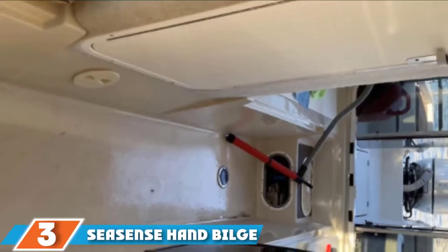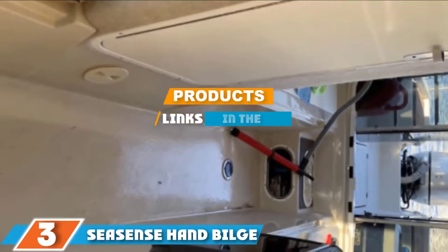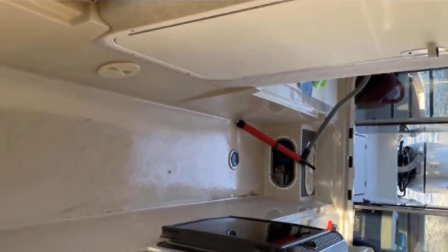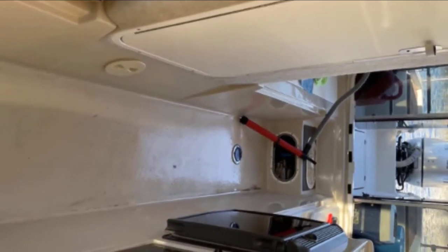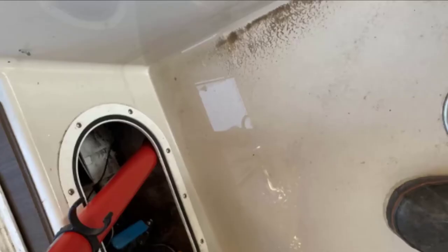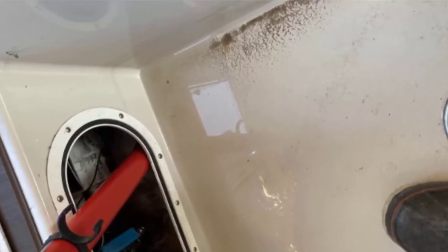Moving on to the next, at number three, we have Sea Sense Hand Bilge Pump Hose. This hand bilge pump hose is designed to be used for manually pumping out water from your kayak or canoe and comes with a hose attached. This can allow you to pump water further away from your cockpit or other area and force it over the side directly through the hose.